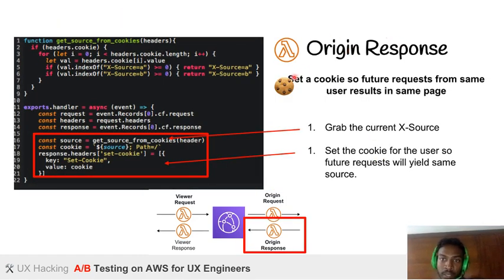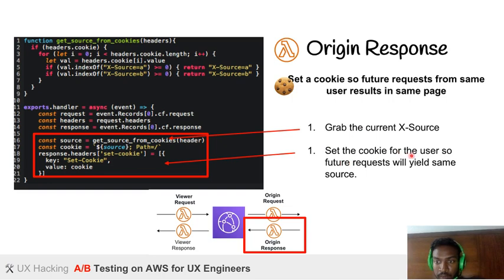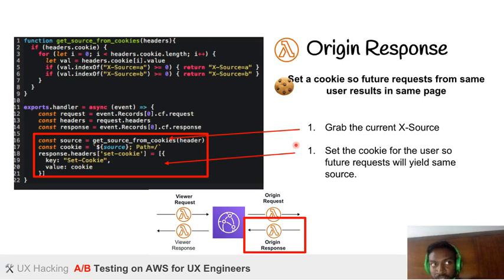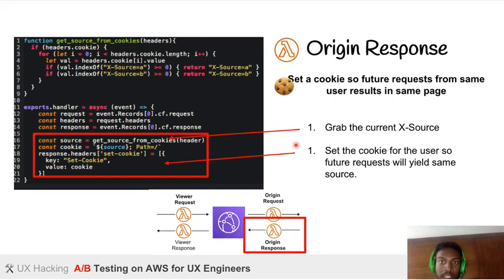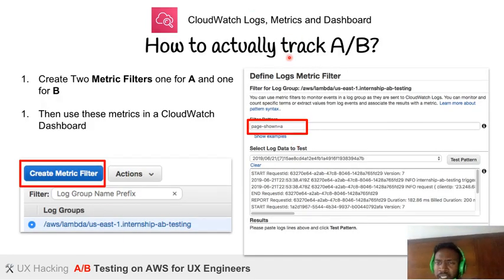The origin response function sets the cookie so that future requests from the same user result in the same page being served. It grabs the current X-Source value and sets the cookie for the user, ensuring future visits yield the same source. The goal is: if someone accessed the website and refreshes, they should only see prototype A — because they accessed A first — so we can track their behavior consistently. Without this, refreshing might serve a different version.